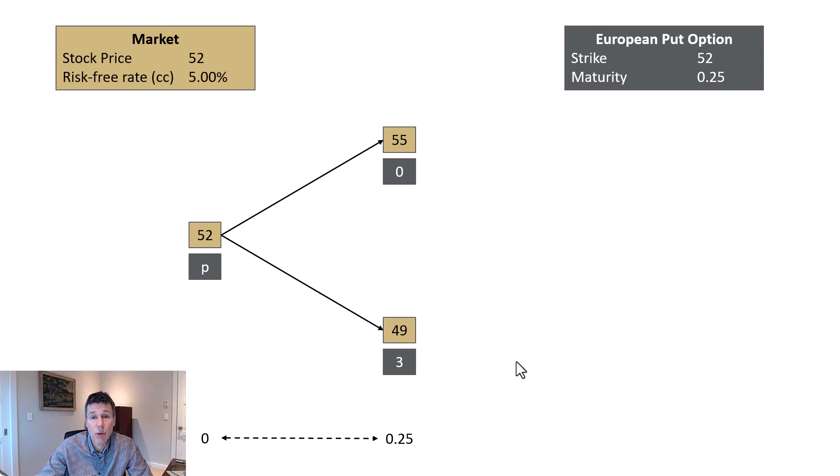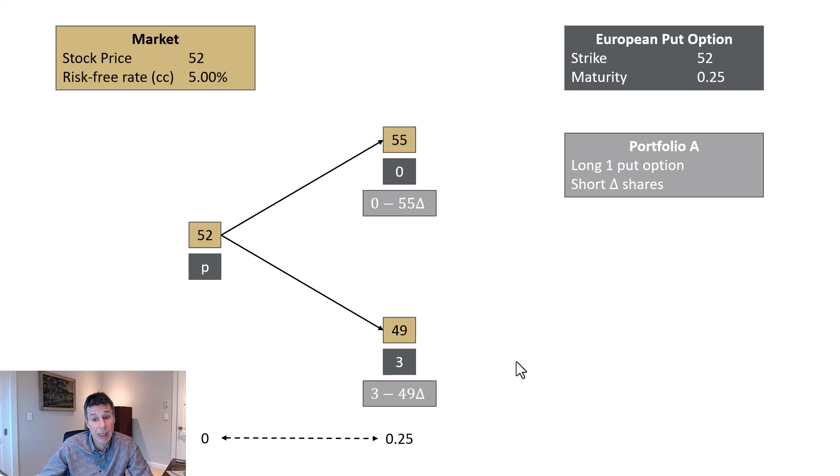What we're going to do is we're going to create a portfolio in which we are indifferent to whether the stock goes to 55 or 49. So this is our risk-neutral portfolio. Our first portfolio, in which we're indifferent, is going to be long the put and short delta shares. If we think about this portfolio, if the stock goes to 55, the portfolio is worth 0 minus 55 delta. If the stock goes to 49, it's worth 3 minus 49 delta. And today that portfolio is worth P, whatever P is, minus 52 delta.